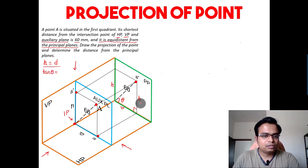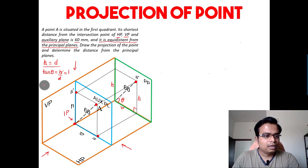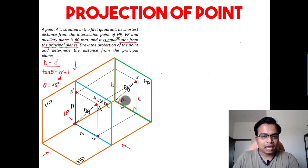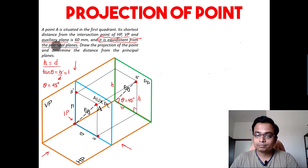H and D are both the same, so they cancel out, and tan theta works out as 1. When tan theta equals 1, we know the angle is 45 degrees. So this angle is 45 degrees — and this was hidden data, hidden in the statement 'equidistant from the principal planes.' This is a very important statement without which this problem could not proceed.